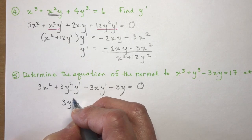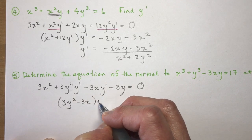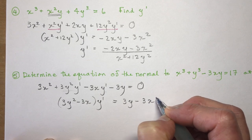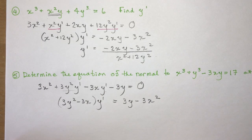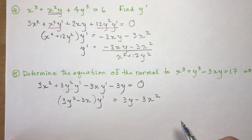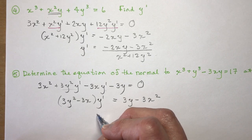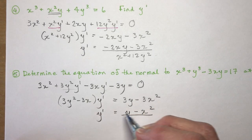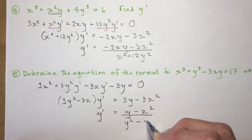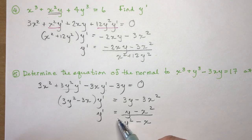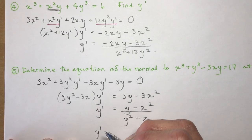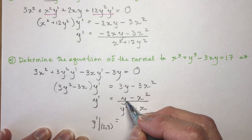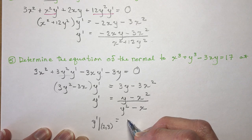Collect y′ terms: (3y² − 3x)·y′ = 3y − 3x². Everything has a factor of 3, so divide through: y′ = (y − x²) / (y² − x). At the point (2, 3): y′ = (3 − 4) / (9 − 2) = −1/7. That's the slope of the tangent.